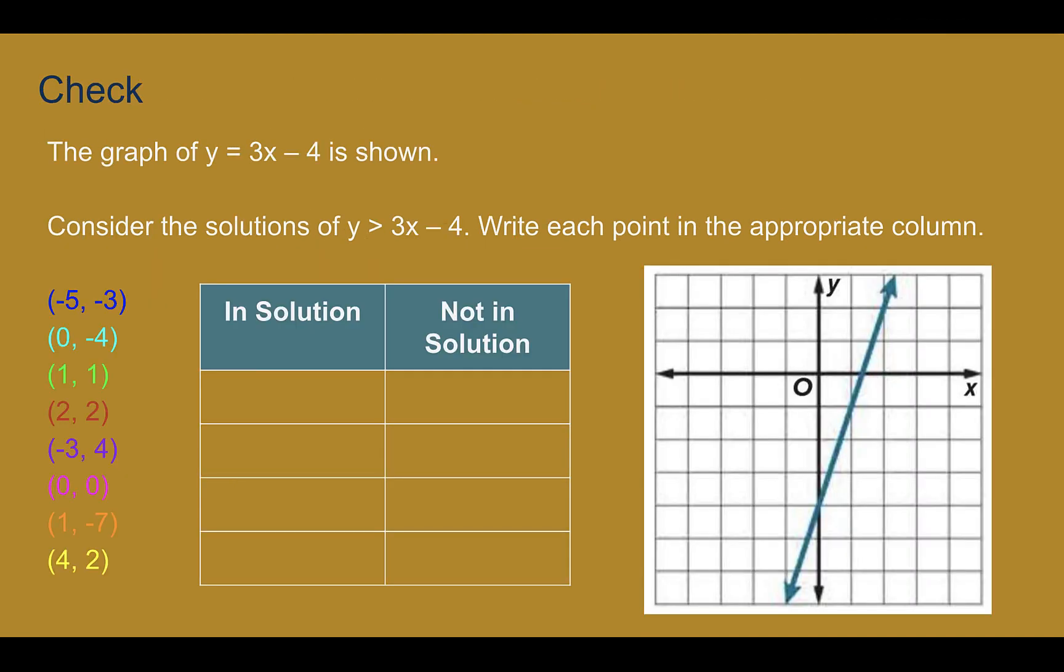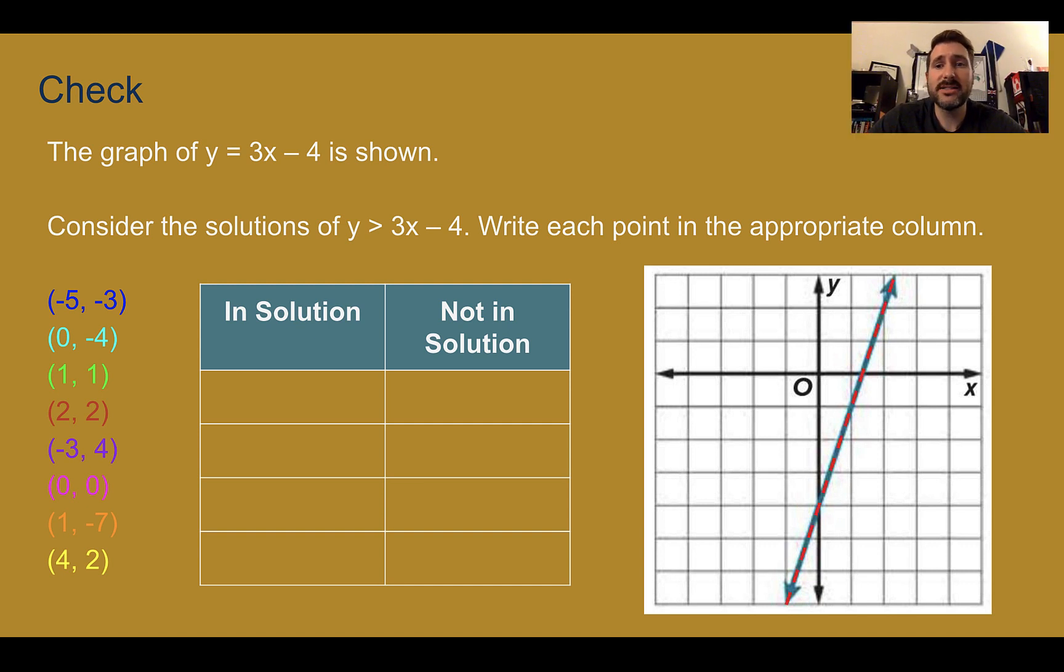Check your understanding. The graph of y equals 3x minus 4 is shown. Consider the solutions of y is greater than 3x minus 4. Would those points be solutions or not part of the solution? You may use Desmos to help. Pause the video now and complete the check. Let's check our answers. So first, you need to realize that because it has this symbol here, that our boundary is actually a dashed line. Then, if we choose our test point, so let's say we test (0,0), which actually happens to be down here anyway. Is that going to be part of the solution? Yes, it would be. If we plug in 0, we end up with 0 is greater than negative 4. Is that true? Yes. So, our shaded area should include (0,0).